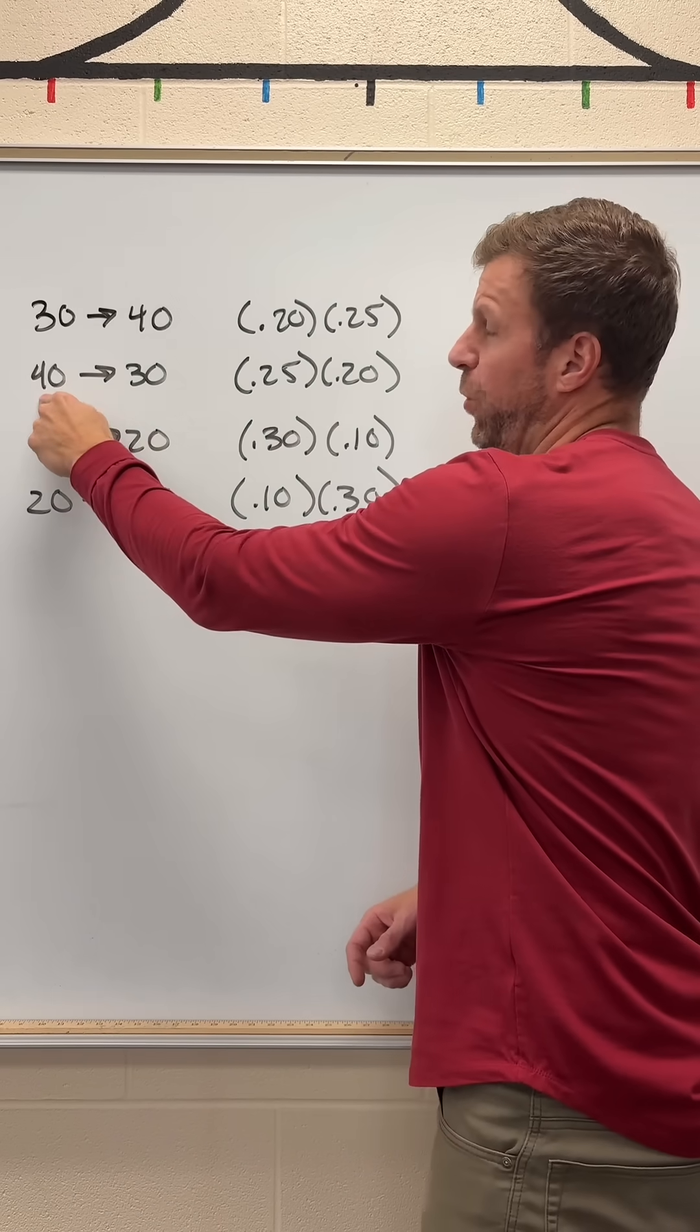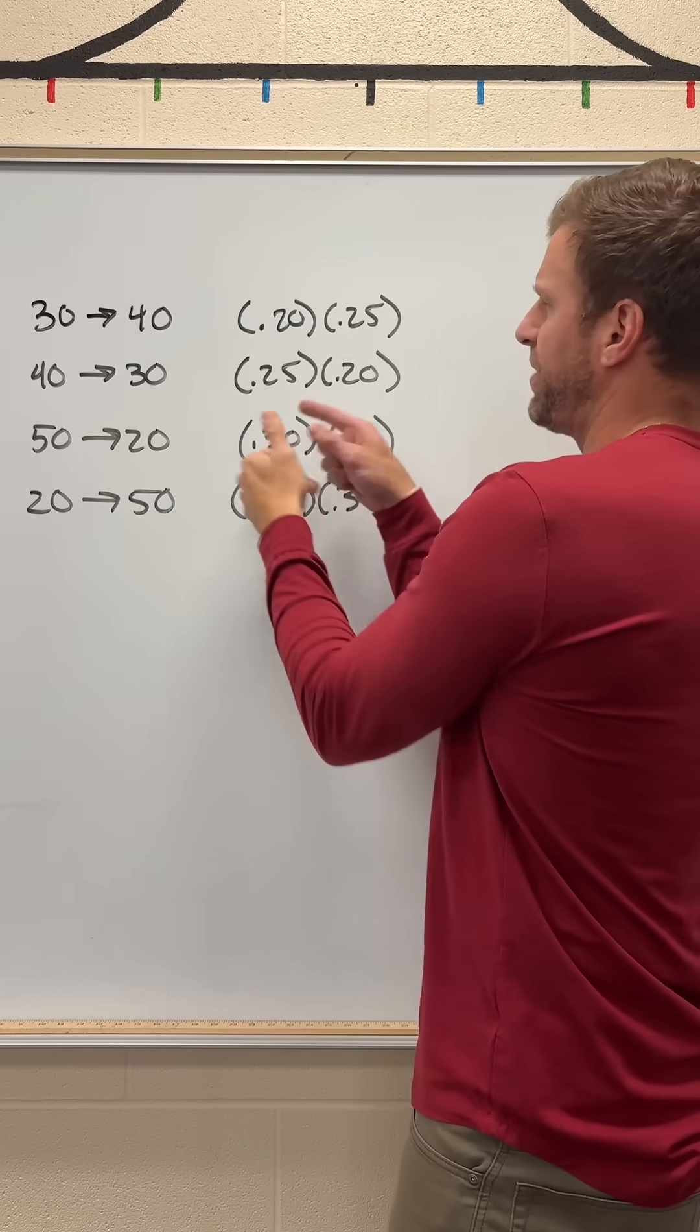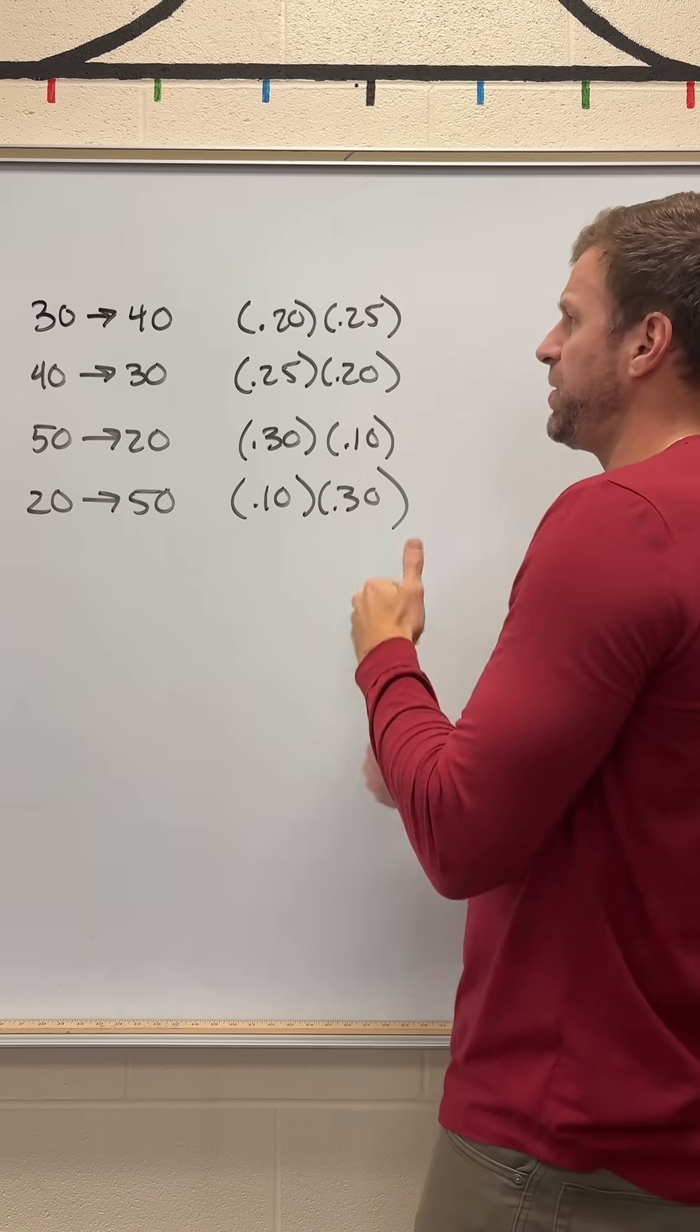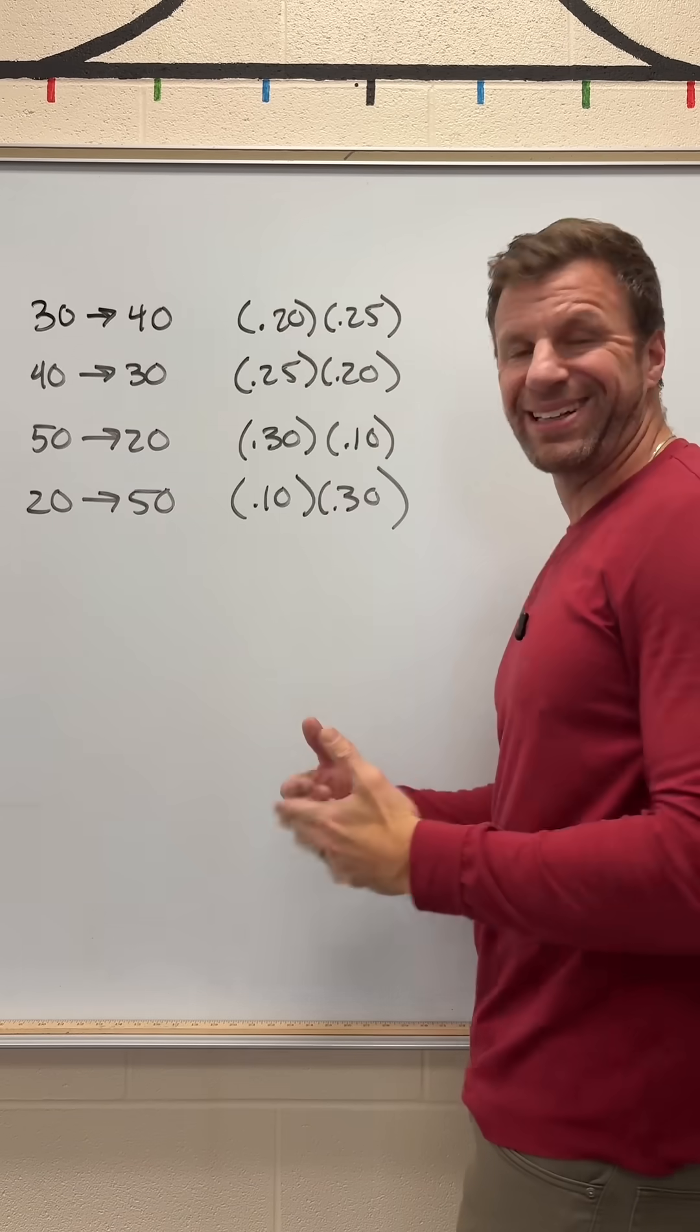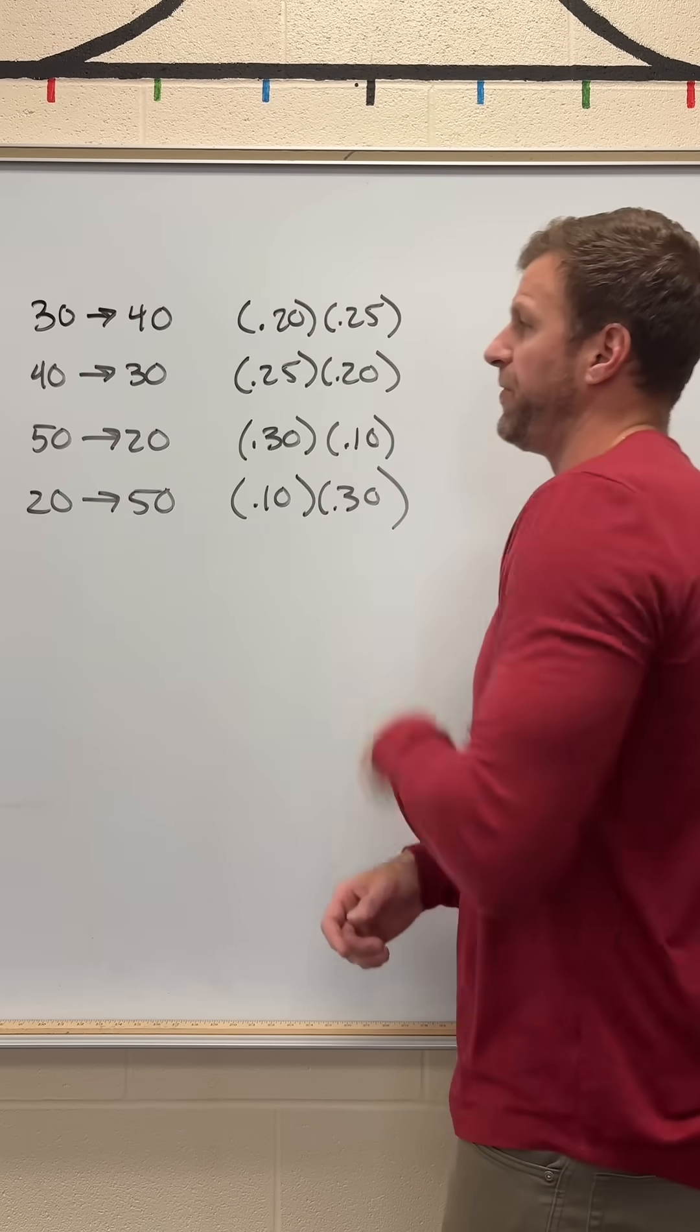But then we could also get 40 on the first and 30 on the second. Mathematically, that's still 0.25 times 0.20, so it's the same probability of 0.05, but those are two distinctly different outcomes. So far we've got 0.05 and 0.05.